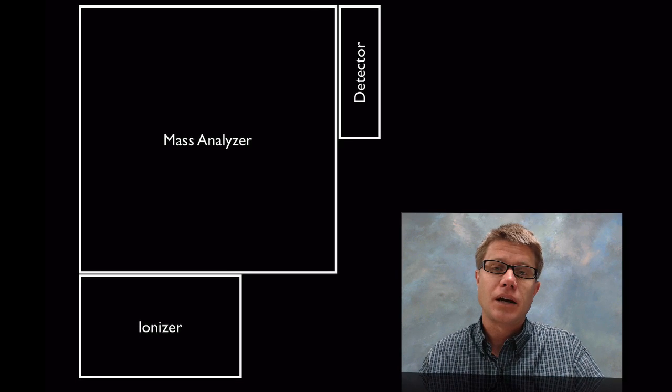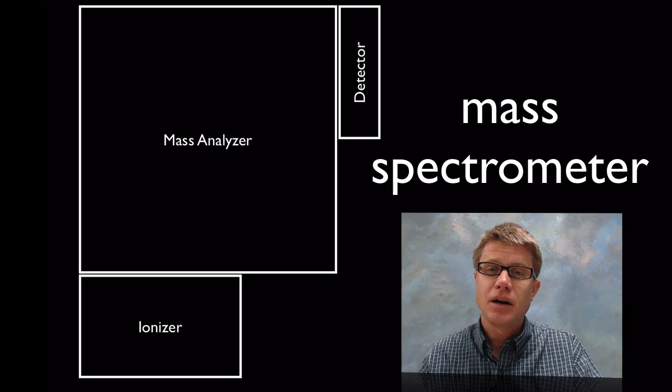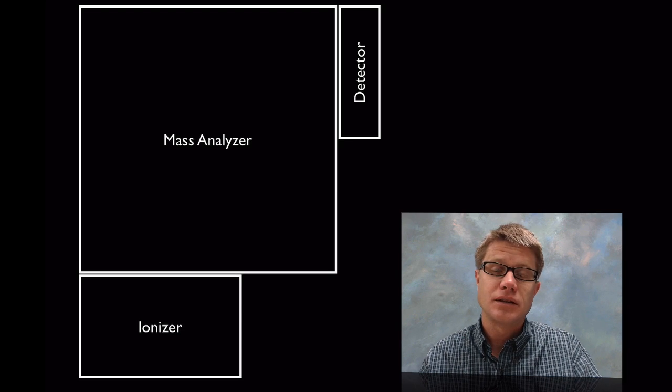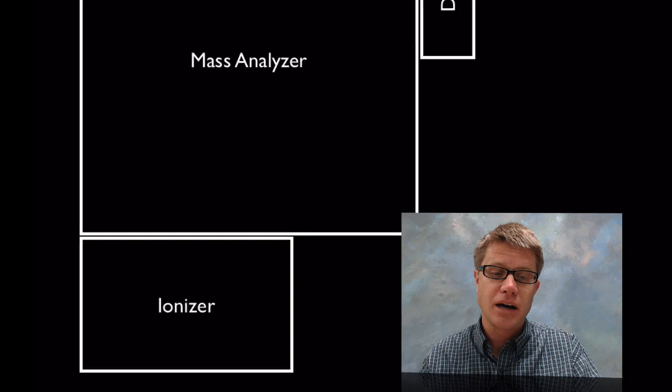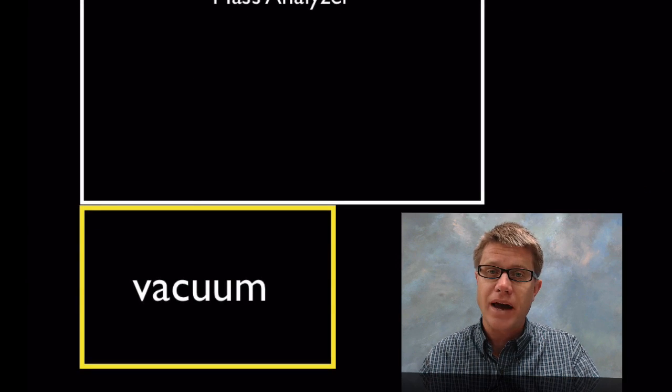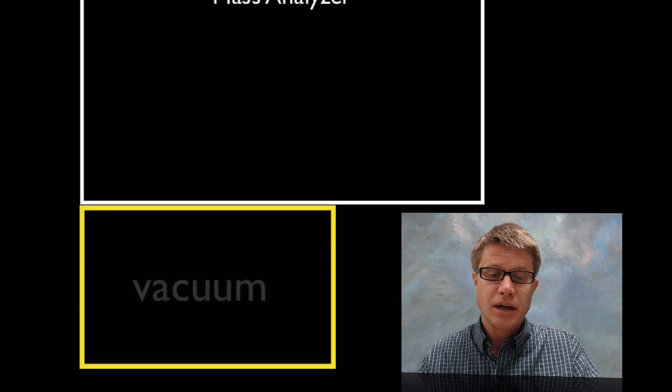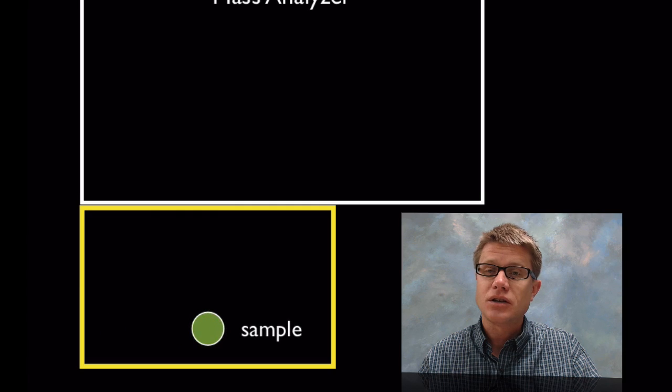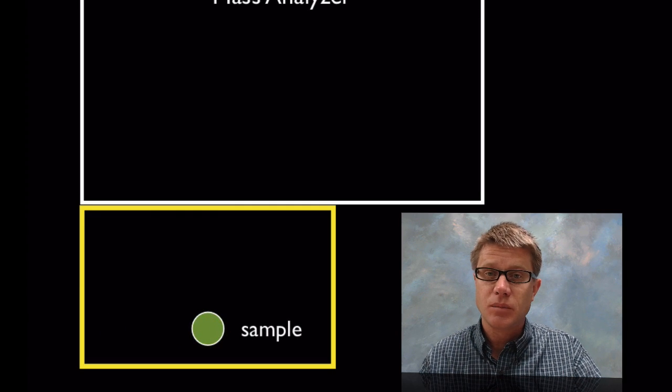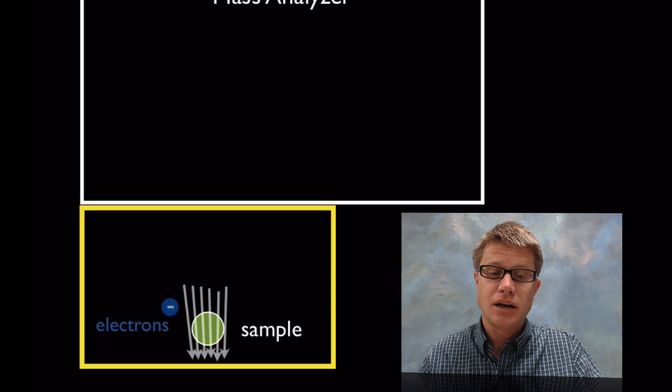If we look at a basic mass spectroscope, we're going to see three parts: an ionizer, a mass analyzer, and a detector. Let's look inside the ionizer. The first thing we're going to find is it's a total vacuum. In other words, this doesn't work unless we remove all of the gas particles. Next, we're going to insert our sample in, which could be a solid, liquid, or gas. We're going to inject it into this ionizing tube.